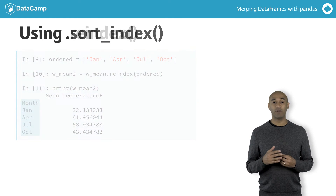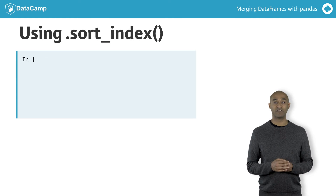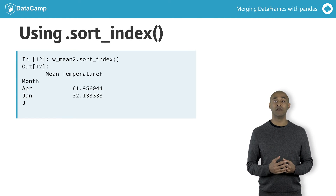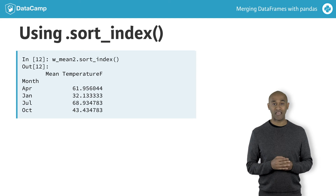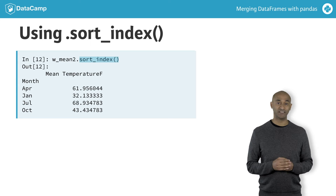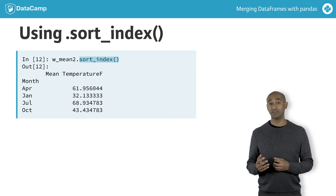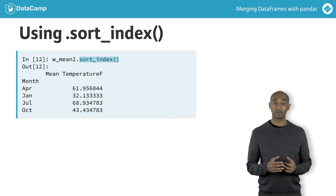The original alphabetically ordered data frame can be recovered with the data frame sort_index method. Pandas index labels are typically sortable data, such as numbers, strings, or datetimes.